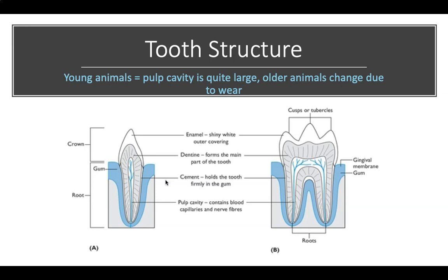It's really important that the pulp cavity is healthy. In young animals, the pulp cavity is quite large; in older animals it gets smaller due to wear on the teeth. Looking at tooth cusps — a tooth can have one singular cusp or many cusps, like three sharp points on the crown. When we get into the different types of teeth, you can understand why some have more cusps than others.